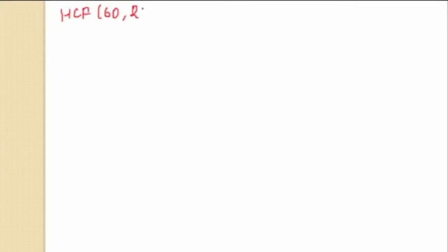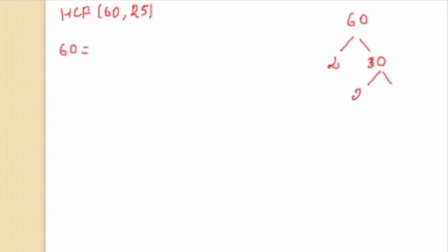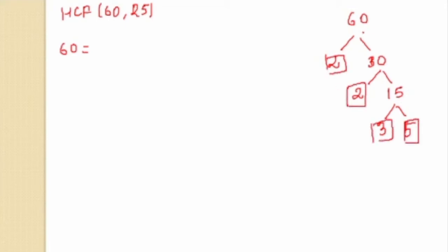Suppose you have to find the HCF of 60 and 25. You factorize 60: pick the smallest prime that divides it, which is 2, giving 2 × 30. Then 30 = 2 × 15. Then 15 = 3 × 5. So at the end of all branches you get primes. Always start with the smallest prime — for instance, 3 also divides 30, but we start with 2.